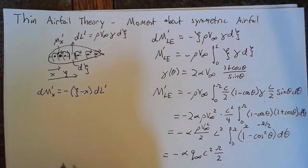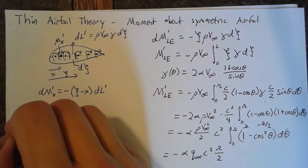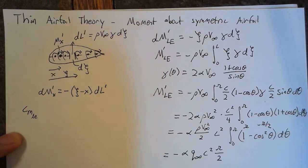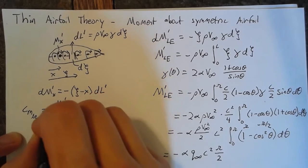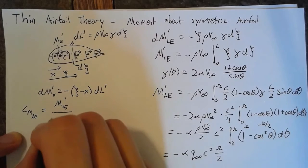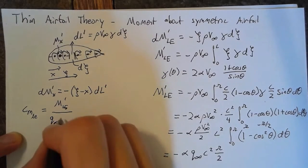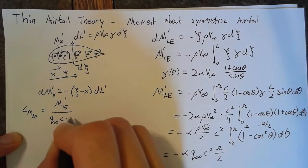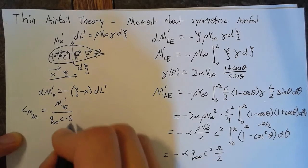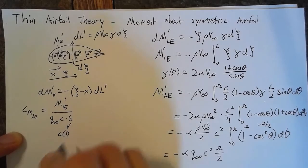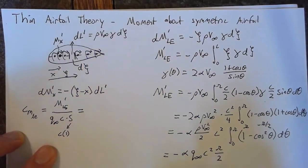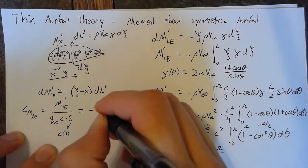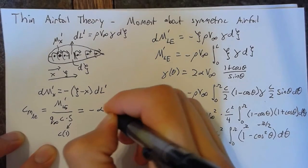If we want to look at the moment coefficient about the leading edge, this is going to be the moment about the leading edge divided by q∞ times c times our surface area. And our surface is simply c times 1. So this becomes, we get rid of the q and both of our c's to become -α π/2.